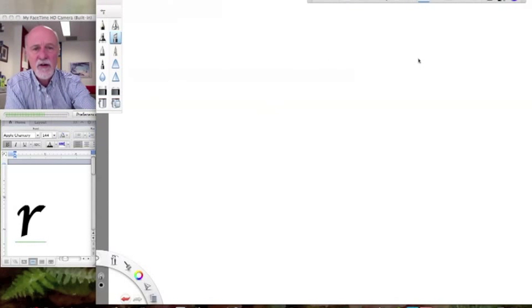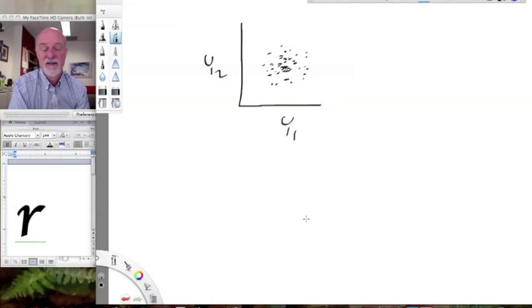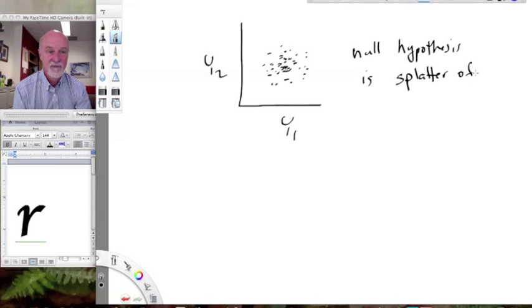So what's our null hypothesis with correlation? Our null hypothesis is basically, I'm going to redraw it this way anyway because it's traditional to draw it the other way. Our null hypothesis is that we've taken a shotgun and we're getting a shotgun splatter of points. In other words, there's no up or down or right or left tendency here. And our null hypothesis is a splatter of points.